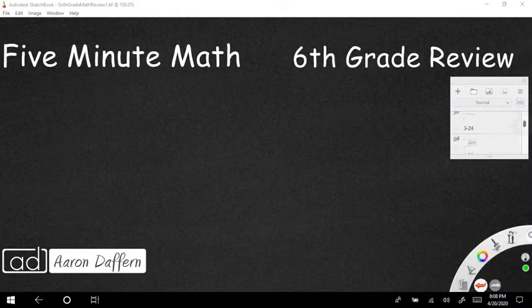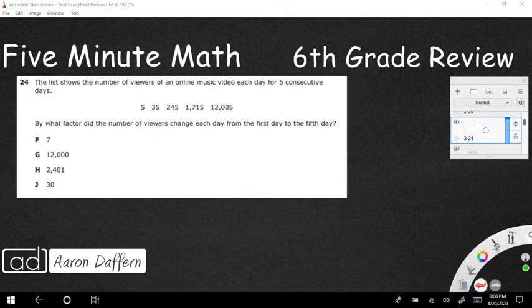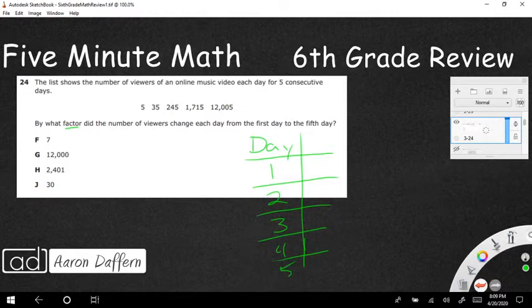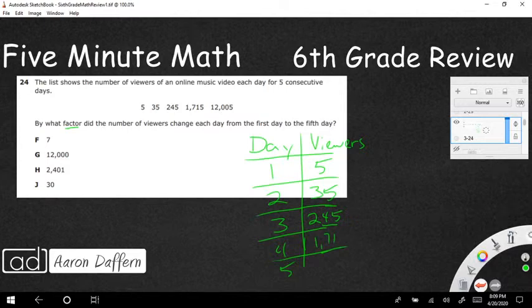So let's look at number 3. Our third problem for this evening is going to be 24. And it looks like it might be kind of difficult, but really what we're looking for is this keyword. The list shows the number of viewers of an online music video for each day for five consecutive days. So I'm going to write this as a table. Day 1, day 2, day 3, day 4, and then day 5. Just because the way they write it sometimes can be a little bit confusing, especially towards the end when you see those commas just thrown in there. Day 1 has got 5, day 2 has got 35, day 3 has got 245, day 4 has got 1715, and day 5 has got 12,005.